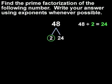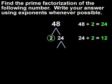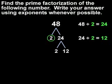But since 24 is not prime, we draw two new branches. Since 24 divided by 2 is 12, we know that 2 and 12 are factors of 24. So we write 2 and 12 at the bottom of the branches. Next, we circle any prime factors in the factor tree. Since 2 is prime, we circle 2.